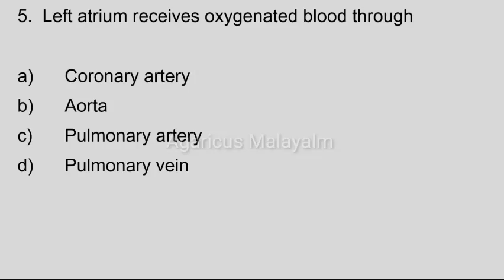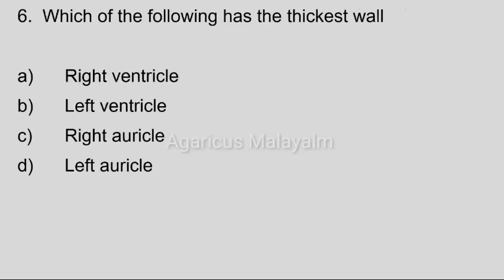Sixth question: Which chamber is being identified? Option A: right ventricle; option B: left ventricle; option C: right atria; option D: left atria. Correct answer: option B, left ventricle.